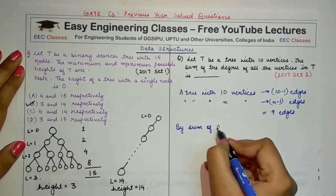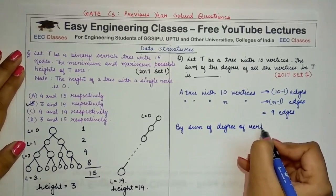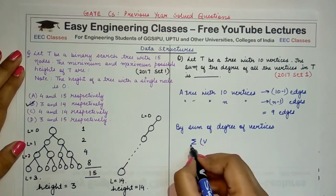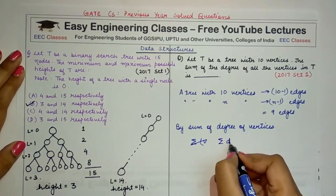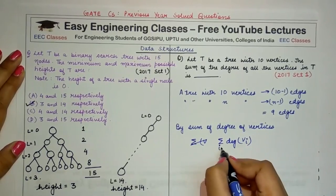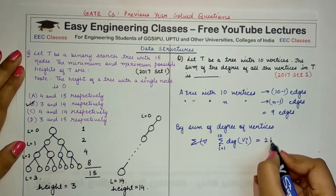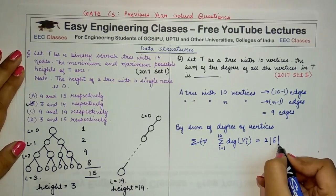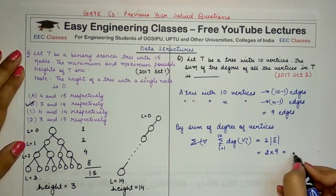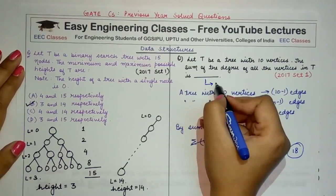By the sum of degrees of the vertices, we know that sum of degrees of vertices where i ranges from 1 to 10, because there are 10 vertices in this case, would be twice the number of edges. And the number of edges in this case is 9, so the total answer that comes out to be 18. So here the answer that you'll fill in would be 18.